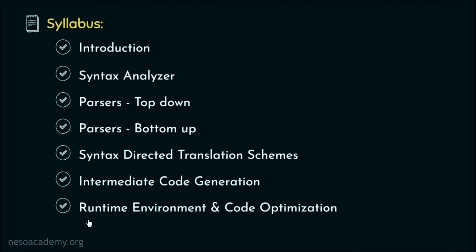Finally, Chapter 7 will be all about the runtime environment and code optimization phase. In runtime environment, we will get to know about the process structure in details. And in the code optimization phase, we will observe various machine-independent and dependent code optimization techniques. So basically, our proposed syllabus will have seven different chapters.